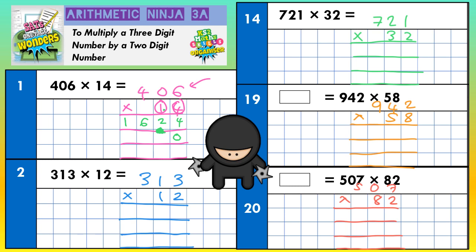So 1 times 6, 1 times nothing, 1 times 4 in that order. 1 times 6 is 6, 1 times nothing is nothing, 1 times 4 is 4. Now the final line is for adding everything together. This top line is 4 lots of 406, and the next line is 10 lots of 406, so together you get 14 lots — exactly what we've been asked for. Add them: 4 plus nothing is 4, 2 plus 6 is 8, 6 plus nothing is 6, 1 plus 4 is 5. That's the first question done.